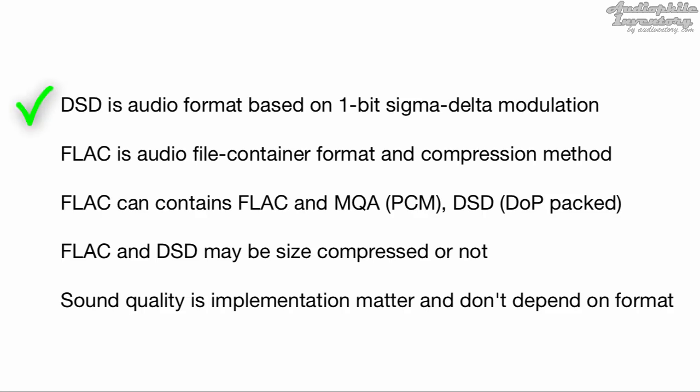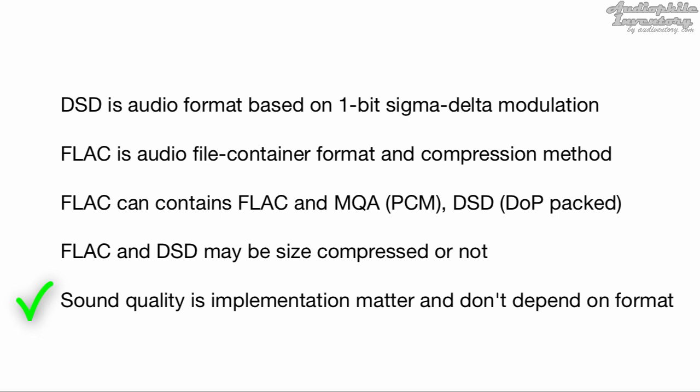Conclusions: DSD is an audio format based on 1-bit Sigma Delta modulation. FLAC is an audio file container format and compression method. FLAC can contain PCM, FLAC with MQA, or DSD audio — these are not the same format. FLAC and DSD may be size compressed or not. Sound quality is an implementation matter and does not depend solely on format.